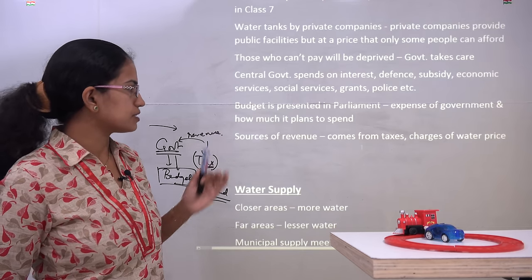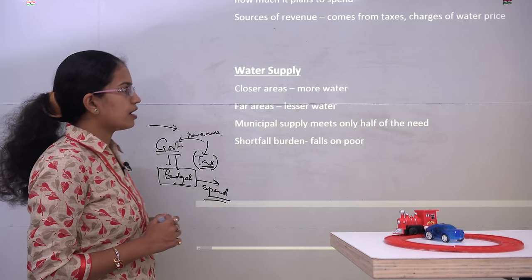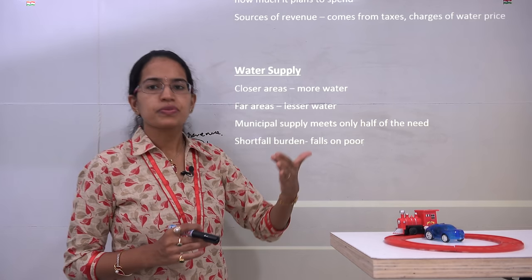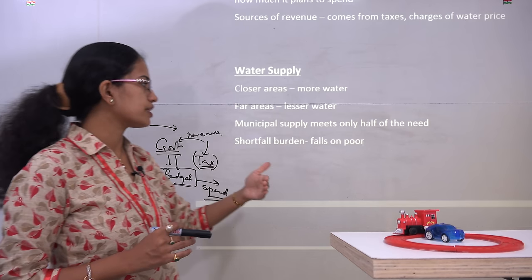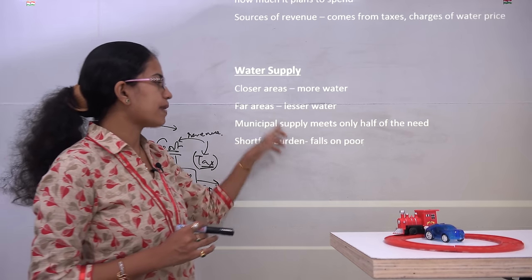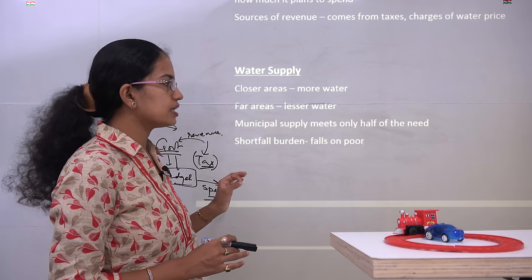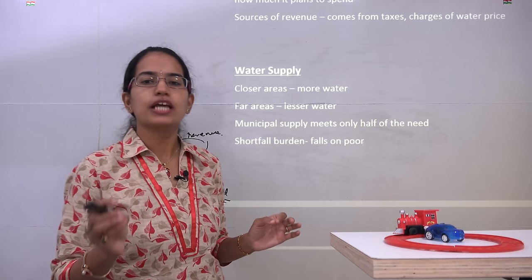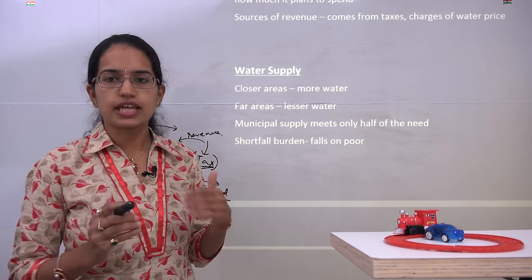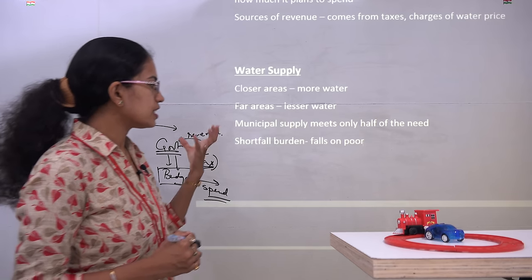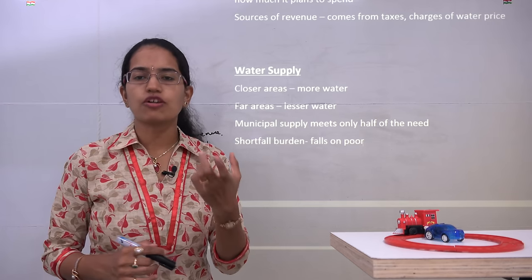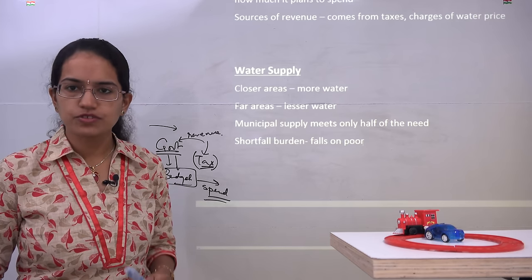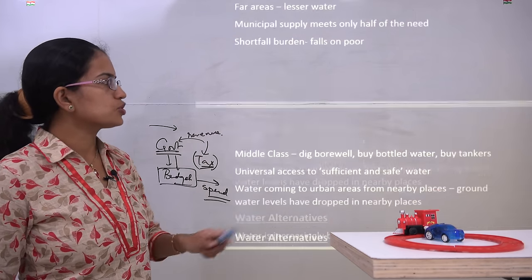As we talked about water supply, the closer or well-defined areas have more water while farther areas from the city have less availability. The municipality or municipal supply aims to meet the needs of people within its area, but still only half of those needs can be met. This shortfall burden ultimately falls on the hands of the poor, who are deprived the most.